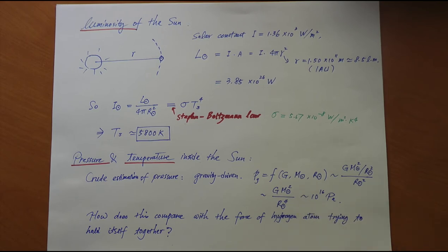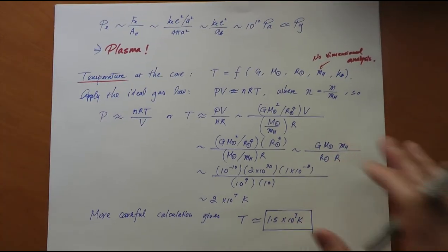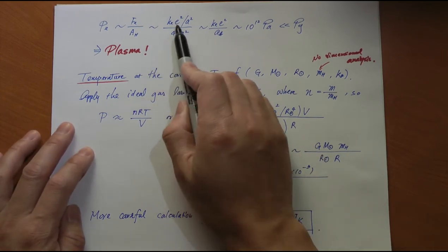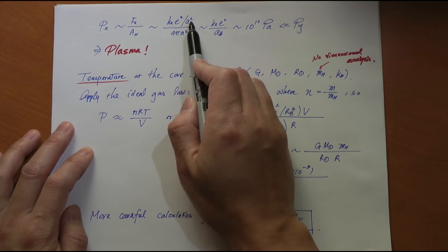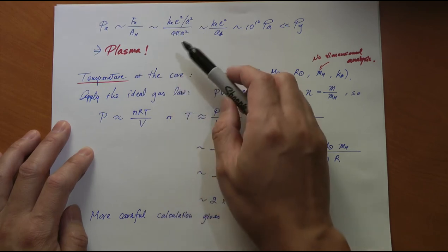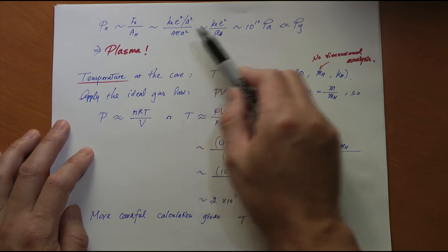We can calculate the pressure caused by the attraction between the electron and proton. The force of the electron and proton is Ke^2 over A. This A is the first Bohr radius. You divide this over the surface area of the atom, which is 4πA^2. Then you get this number.